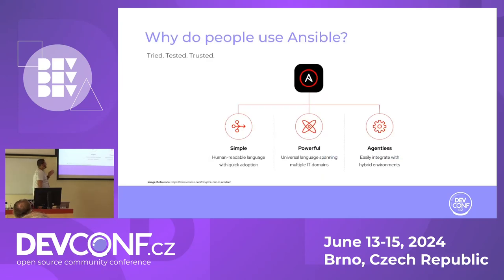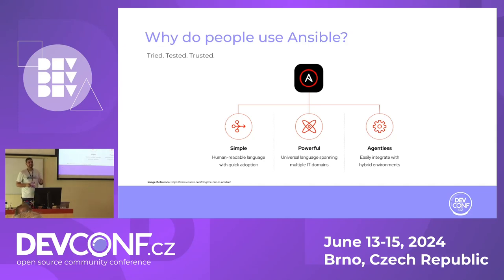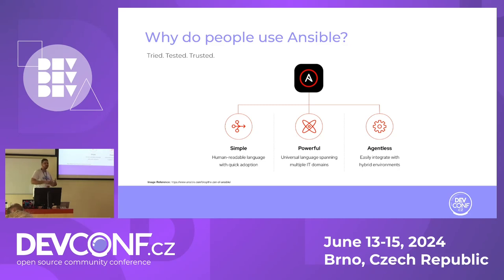Let's start by talking about why we need Ansible. There are a bunch of automation tools in the market - Chef, Puppet, SaltStack, Terraform, etc. Why do people choose Ansible? First, because it's simple. It has a human-readable language that everyone can learn, with a very short learning curve. You can start working with Ansible even without previous knowledge in Python.